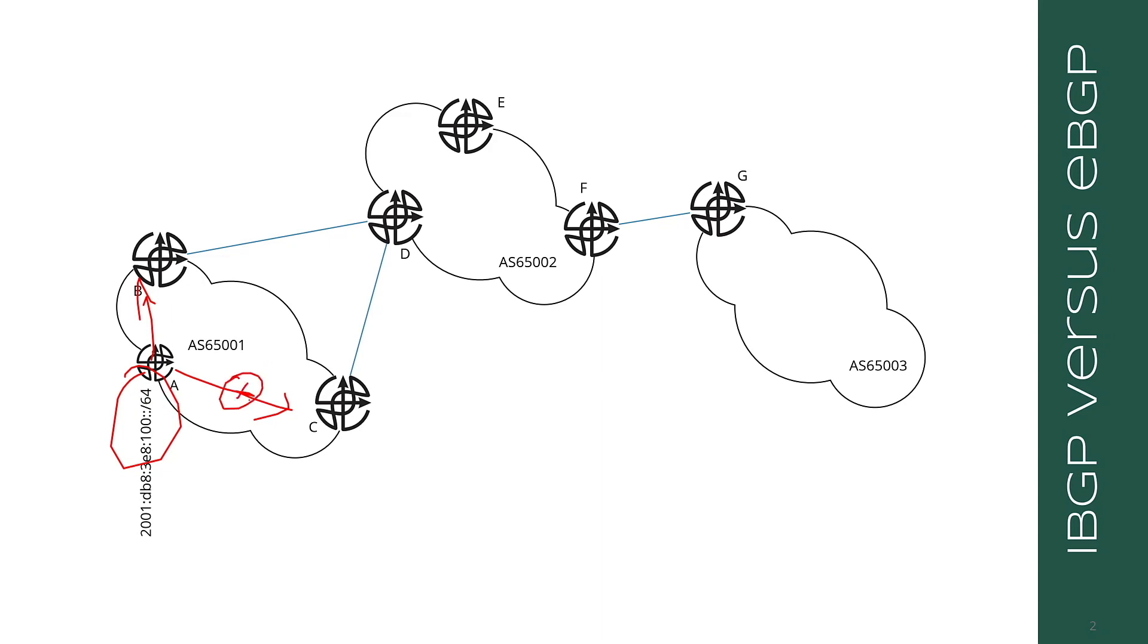This would be an iBGP route, so I would not change the next hop step in any BGP speaker. So if there's another BGP speaker here in the middle between A and C in AS65001, I would find that C's next hop would be A, the originator, rather than the intermediate next hop in here.